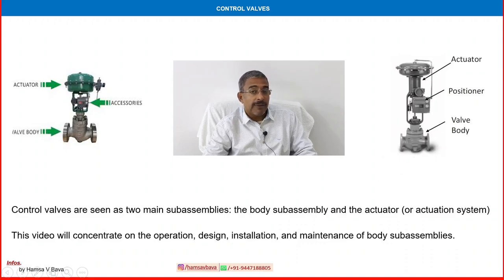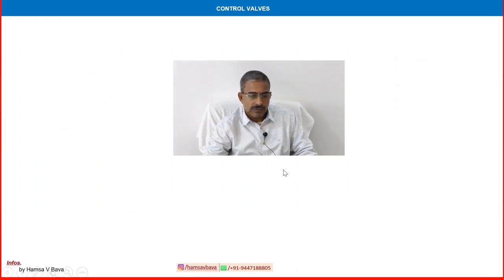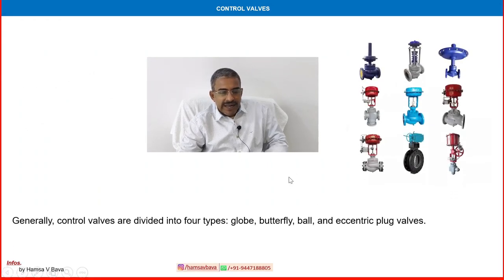In our previous videos, we discussed the non-retained valve, safety relief valve, pressure safety valve, and all other ball valves and manual valves. In this video, we are discussing the control valve body assembly. Generally, control valves are divided into four types: globe, butterfly, ball, and eccentric plug valve.